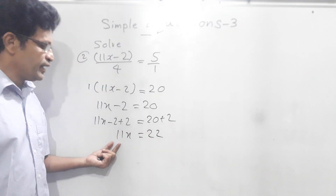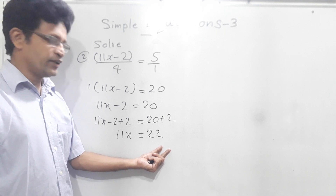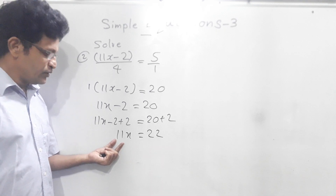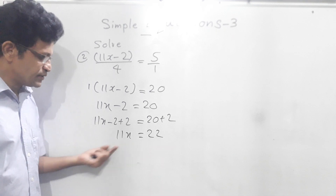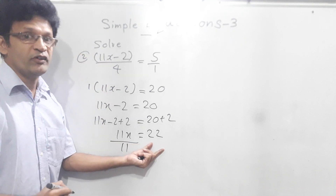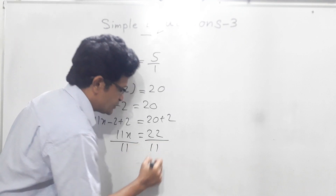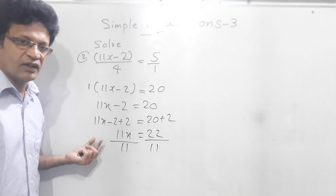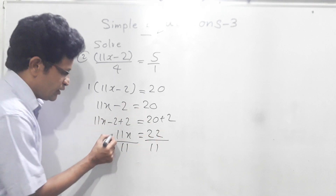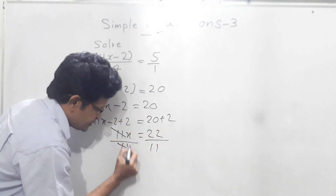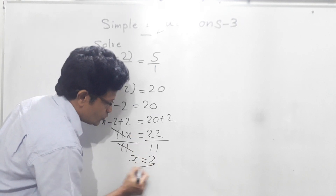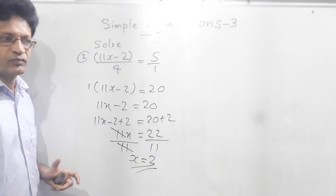Now 11x equals 22. How to find x? We have to get rid of this 11. For that we have to divide this side by 11, then this side also we have to divide by 11, because in the equation if you do something on one side the same thing has to be done to the other side also. 11 and 11 cancel. This side we have x; 22 divided by 11 is 2. So x equals 2.